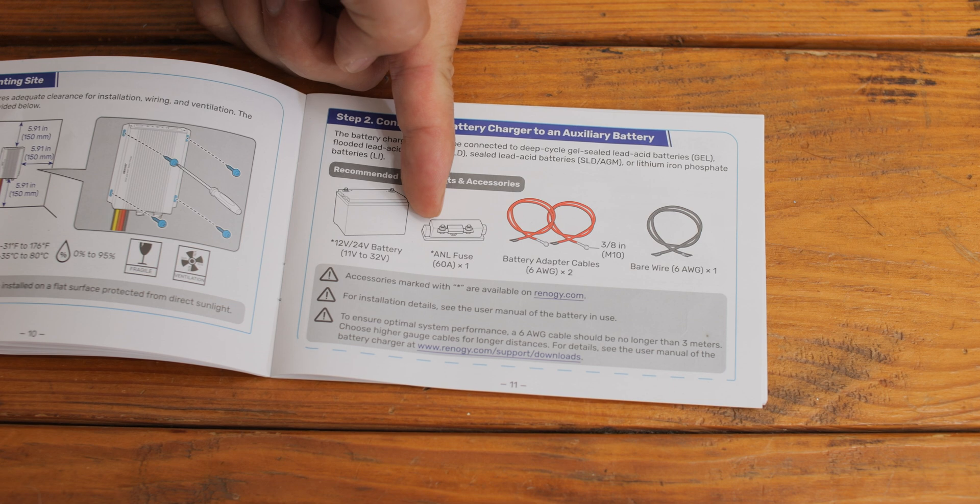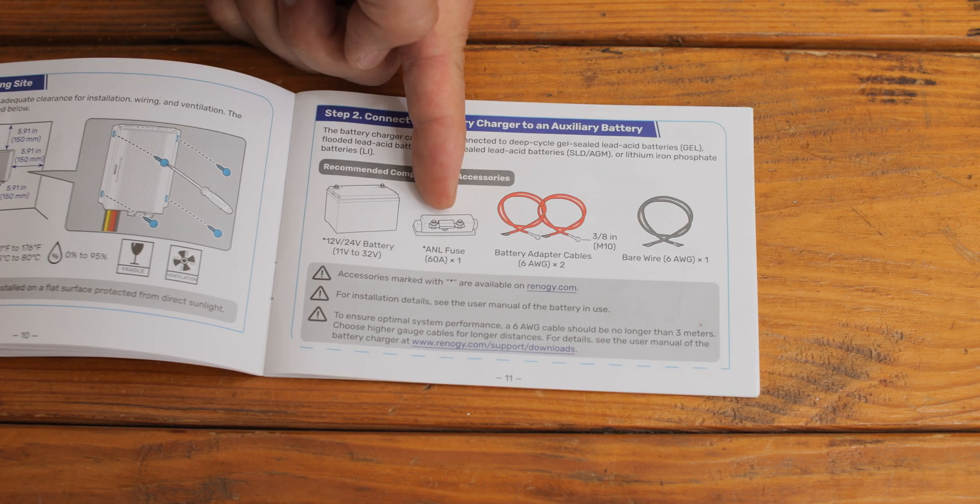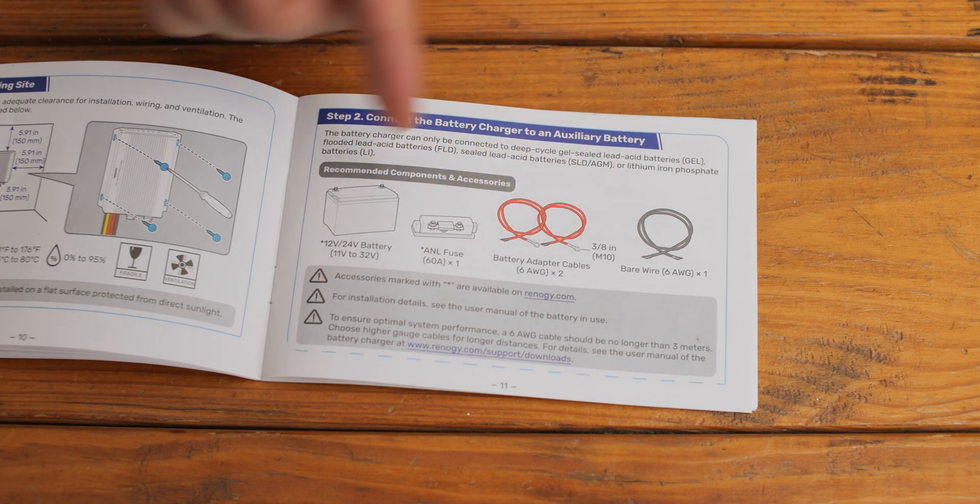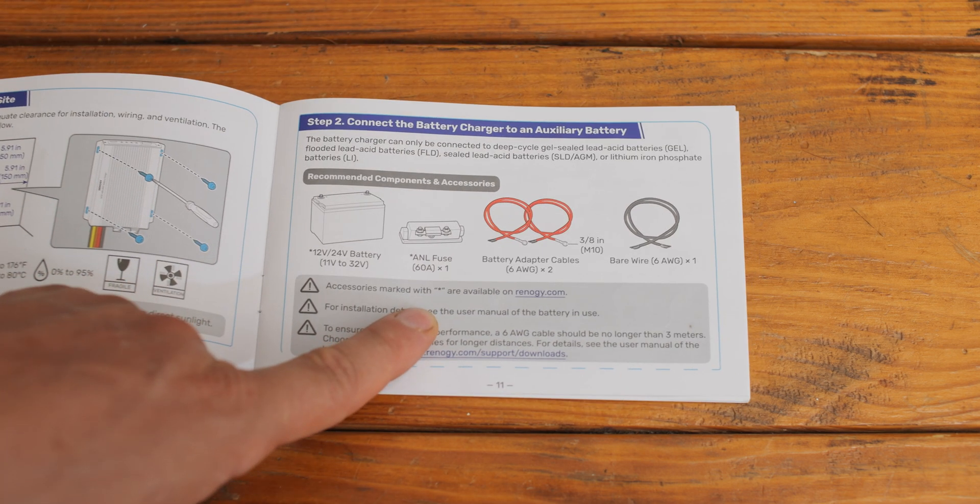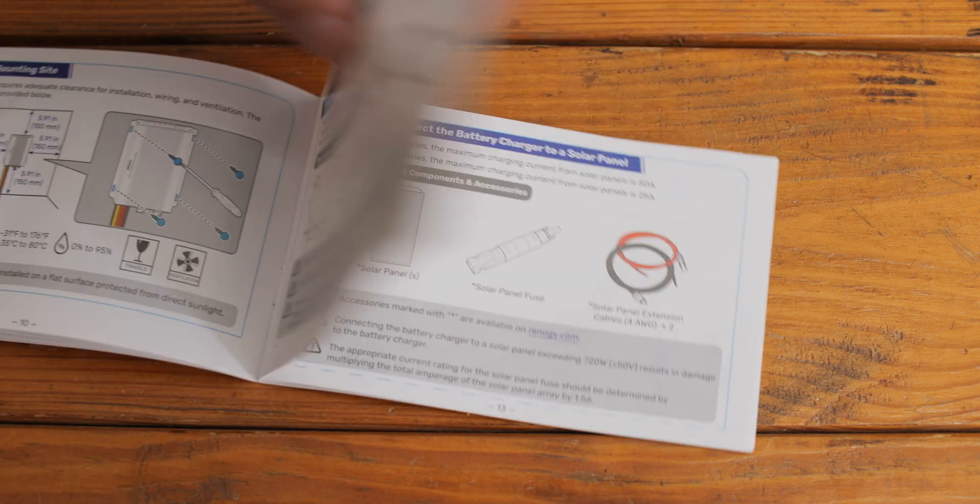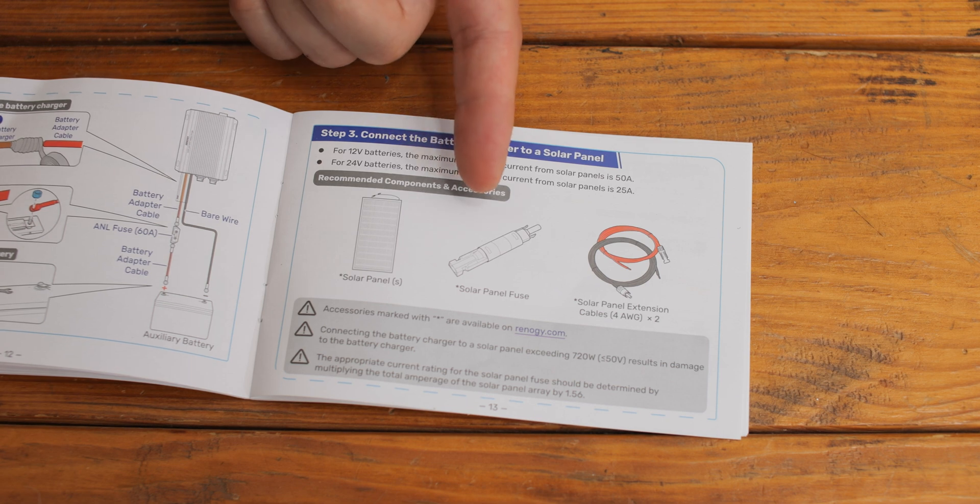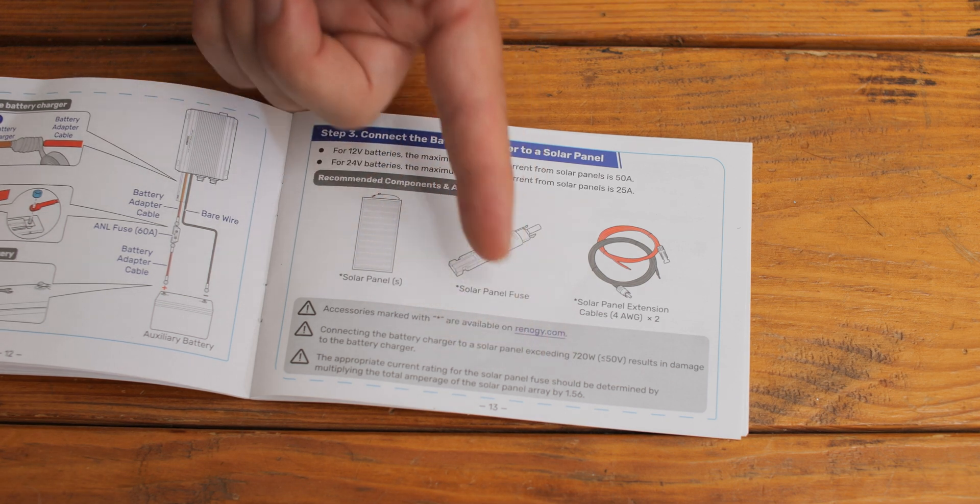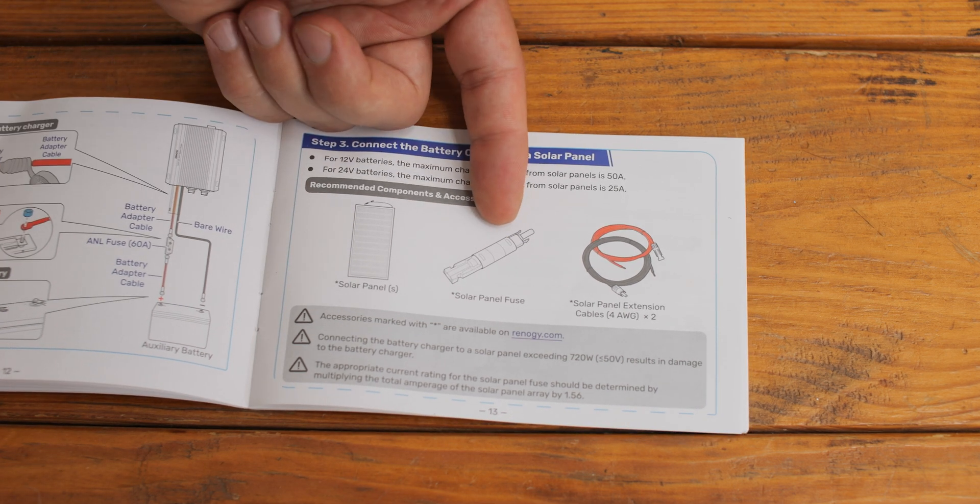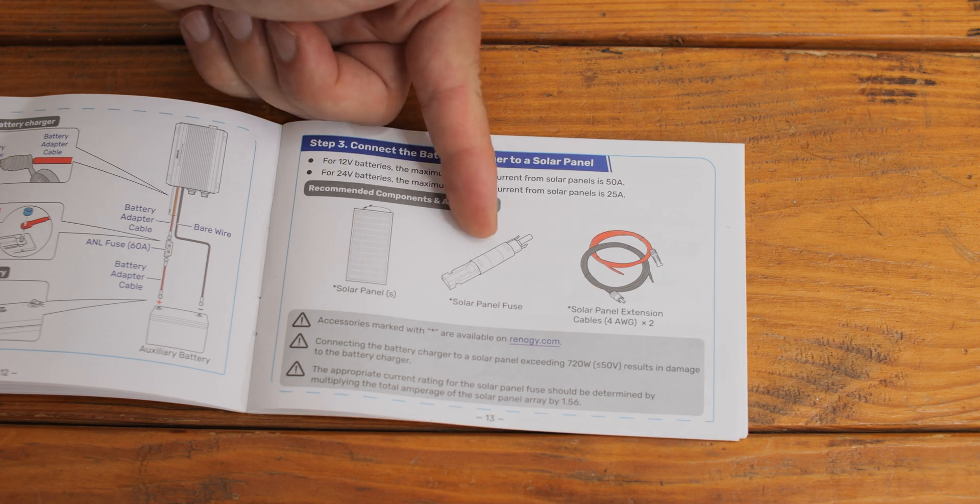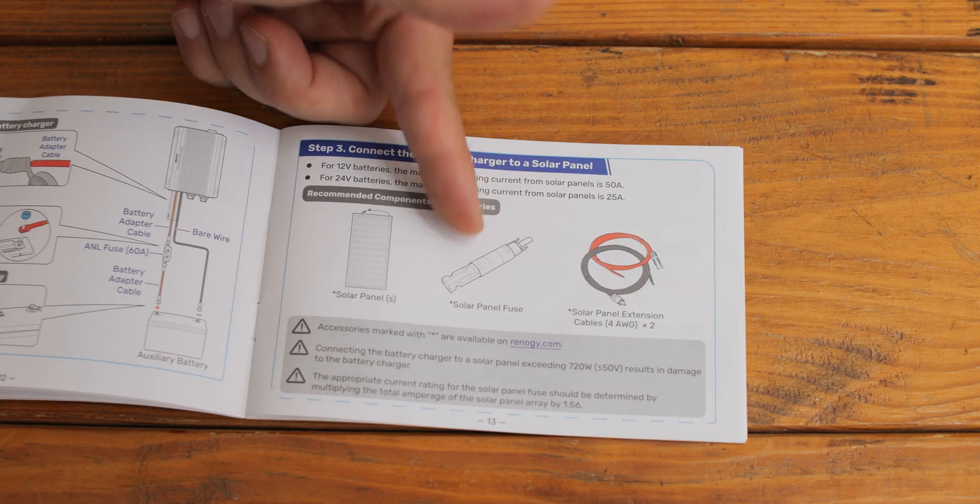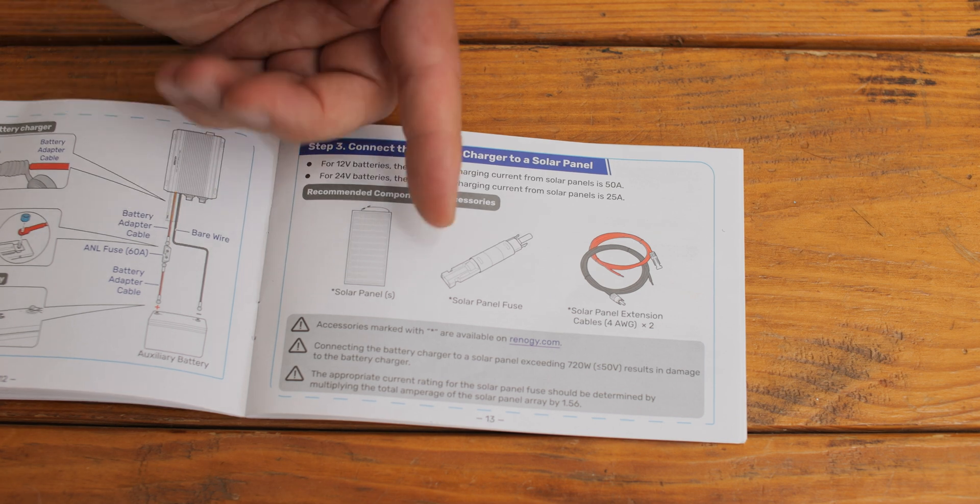This fuse I ordered - the Renogy one - it's not in yet, so I'll find out if the M10 or M8 fits. Keep this in mind: 60-amp fuse here. I calculated mine to 30-amp and bought the Renogy one. I may try some different strength fuses but I got the 30-amp.